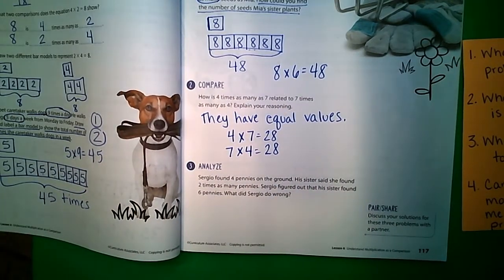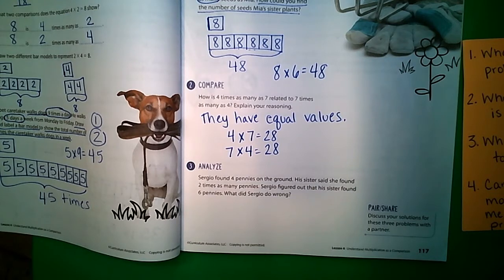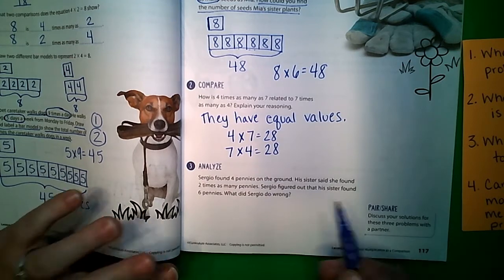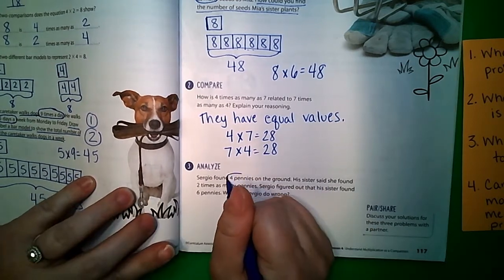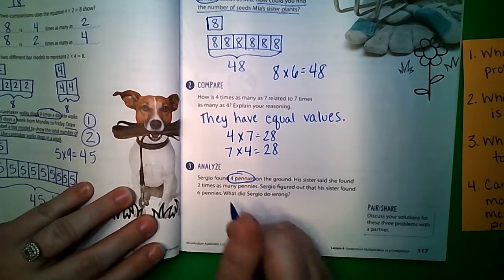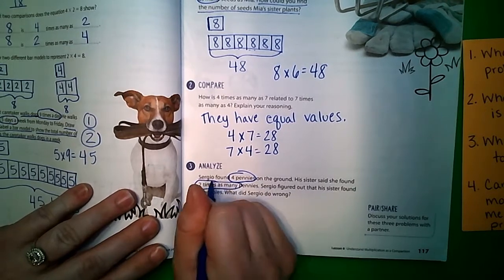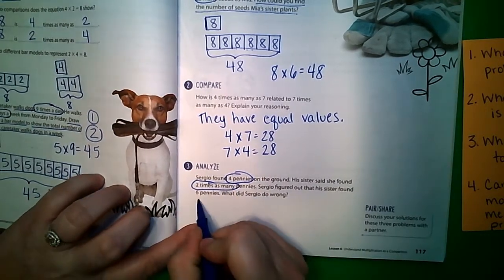Number three: Sergio found four pennies on the ground. His sister said she found two times as many pennies. Sergio figured out that his sister found six pennies. What did Sergio do wrong? Okay, so he found four pennies and his sister found two times as many.